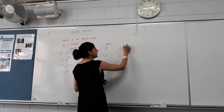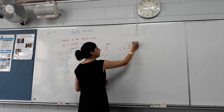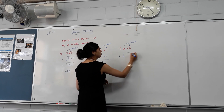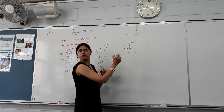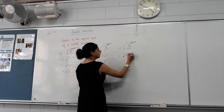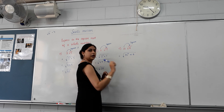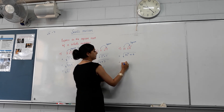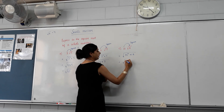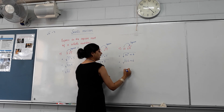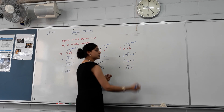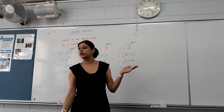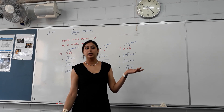10 root 6. The 10 needs to go inside. What happens when we move it in there? We square it. So 10 becomes 10 squared. What is 10 squared? 100. And 100 times 6 equals 600. So the answer is root 600. Perfect.